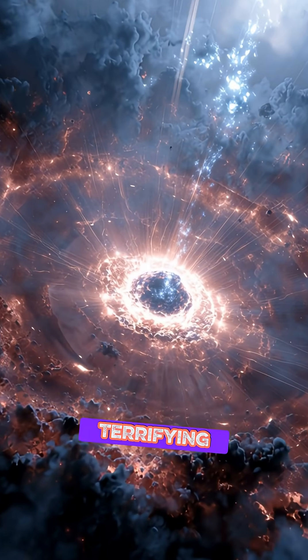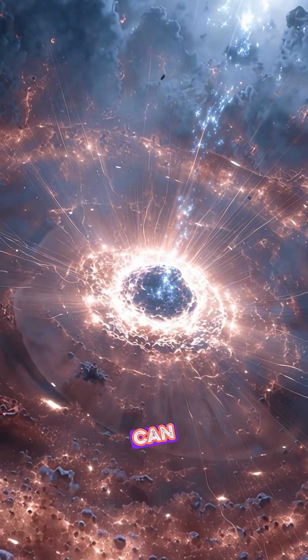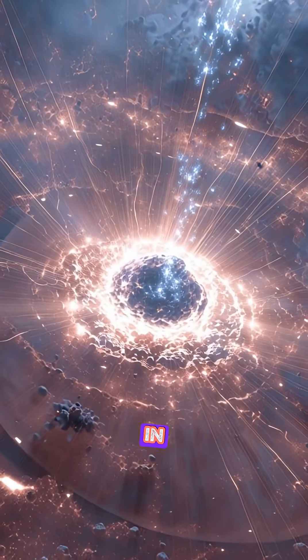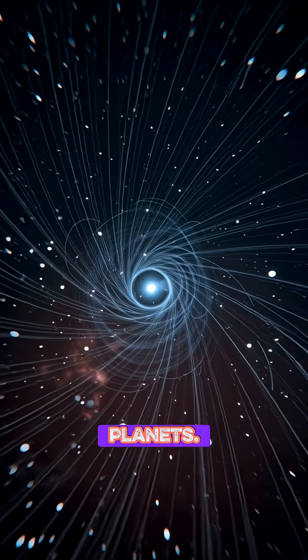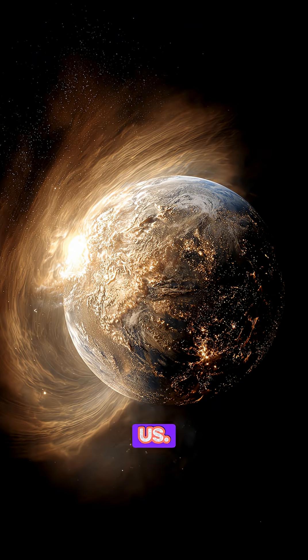For a few terrifying seconds, a magnetar can outshine every star in our galaxy combined. These objects don't hunt planets. They don't move toward us. But if one ever formed close enough, the damage would be cosmic.